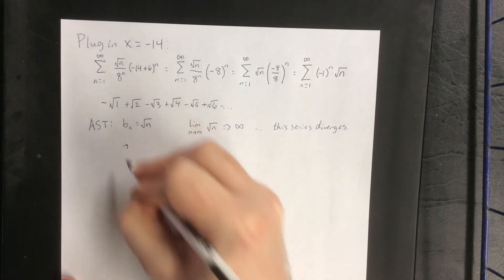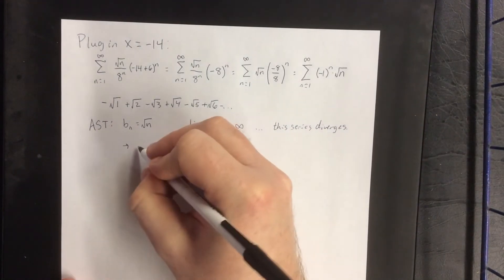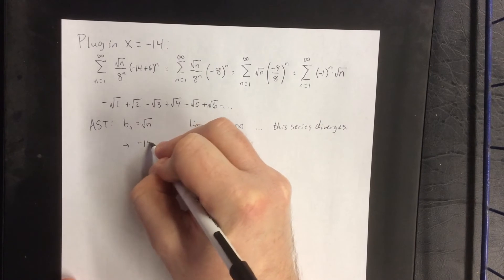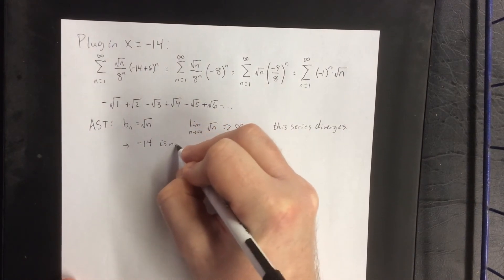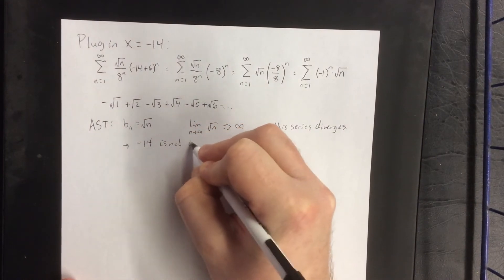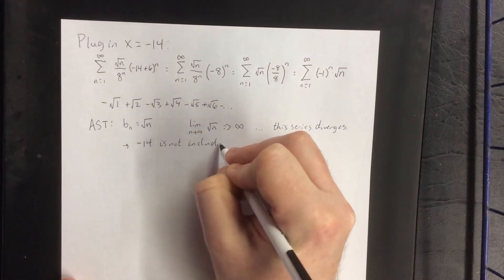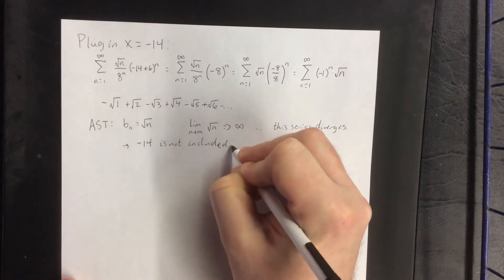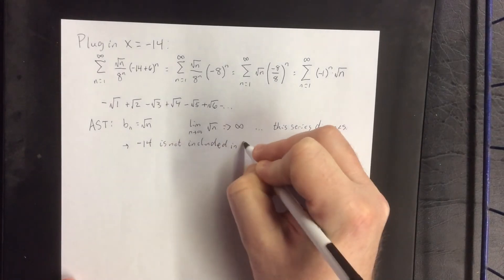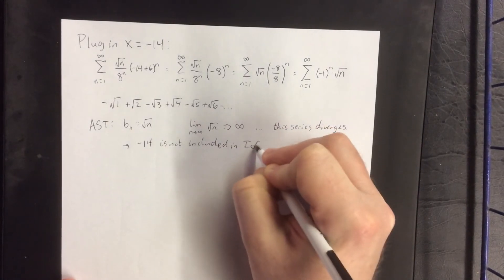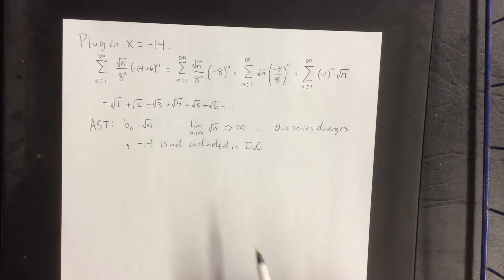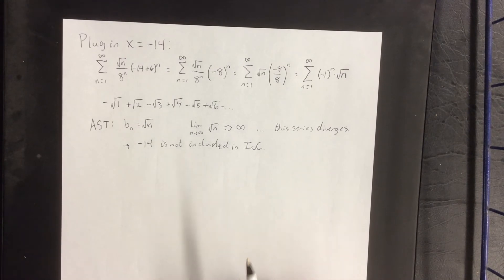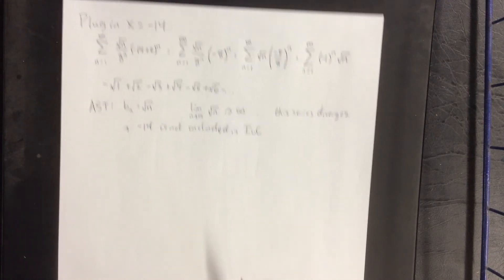The conclusion is that negative 14 is not included in the interval of convergence. Now let's check the other endpoint.